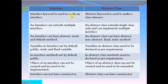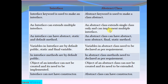Now we will understand all the differences between interface and abstract class one by one. The 'interface' keyword is used to make an interface, whereas the 'abstract' keyword is used to make a class abstract. An interface can extend multiple interfaces, whereas an abstract class can extend only a single class, which could be another abstract class, and it can implement multiple interfaces.